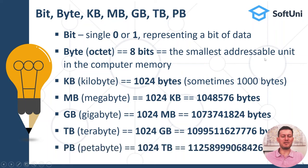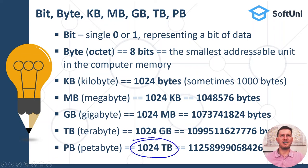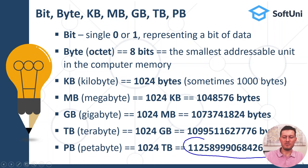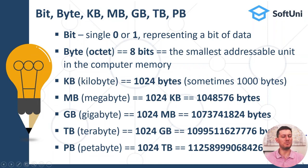The next measurement is petabyte, or PB. Petabytes are 1024 terabytes, and one petabyte holds nearly 1.13 quadrillion bytes. Modern data centers provide and manage storage with capacity of multiple petabytes, sometimes multiple exabytes.